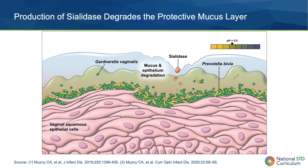Vaginal sialidase produced by BV-associated bacteria, including Gardnerella vaginalis and Prevotella bivia, promotes breakdown of the mucus layer on the vaginal epithelium. Vaginal sialidase is a proteolytic carbohydrase enzyme. At this point, the number of lactobacilli have markedly declined and the vaginal pH has increased.